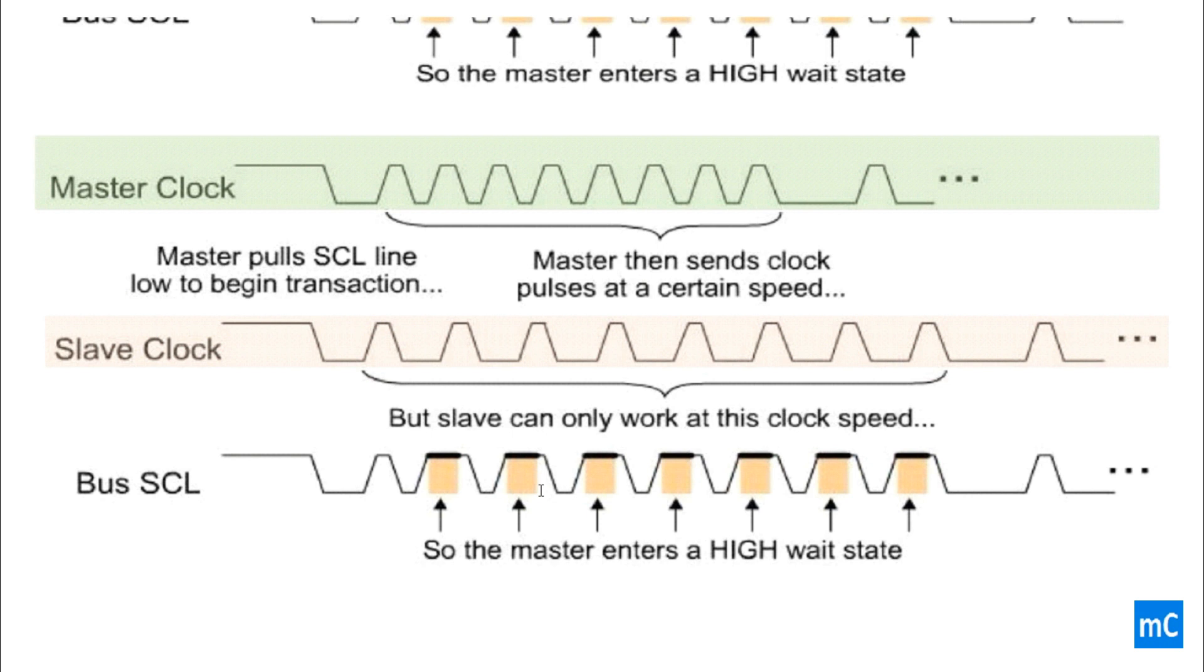You may have some doubt like why the master is operating on higher speed and the slave is operating on lower speed. You can take some example like slaves like EEPROM or ADC. So, when you take this kind of slaves, it may take some duration to process its own operation.